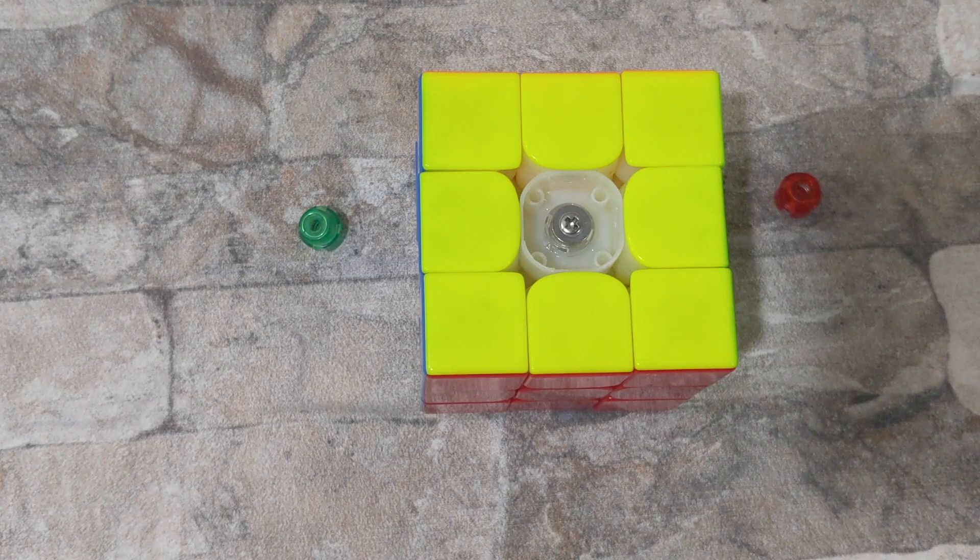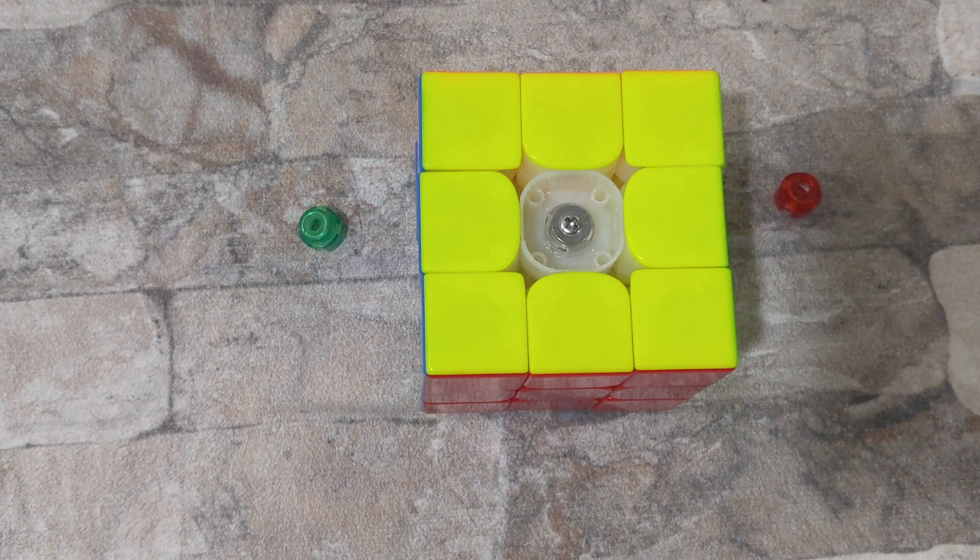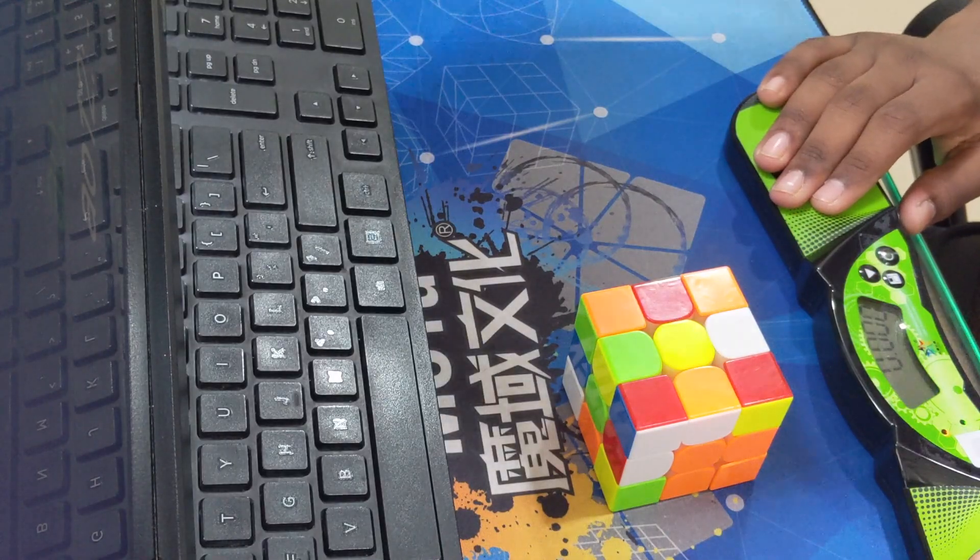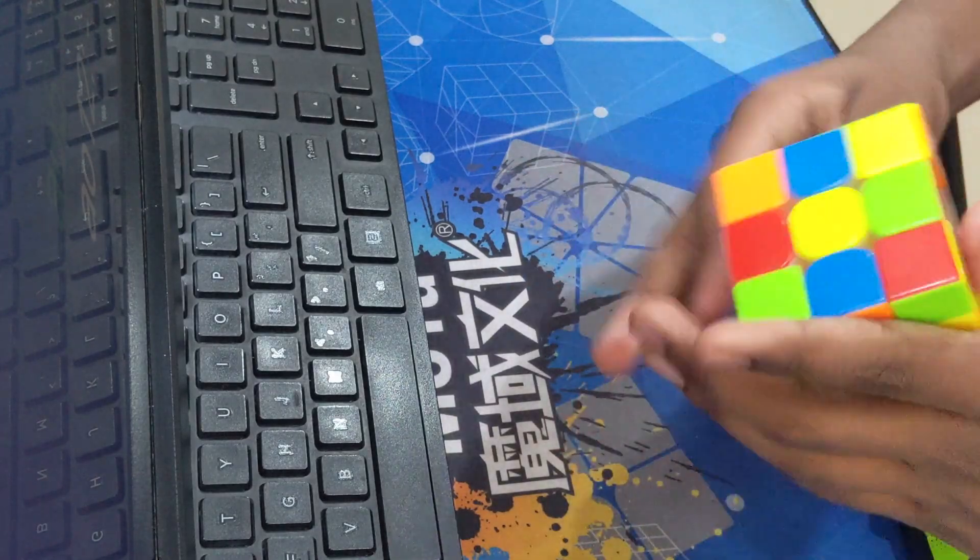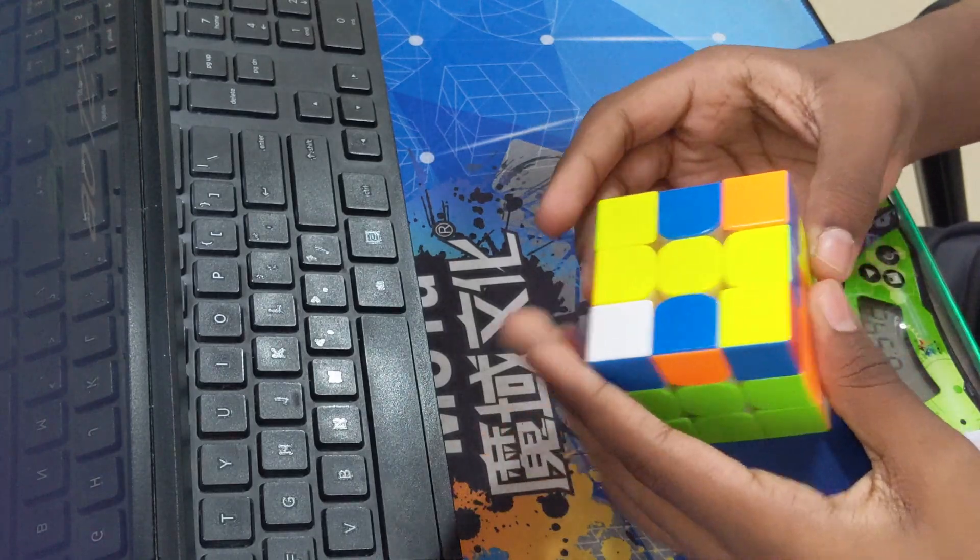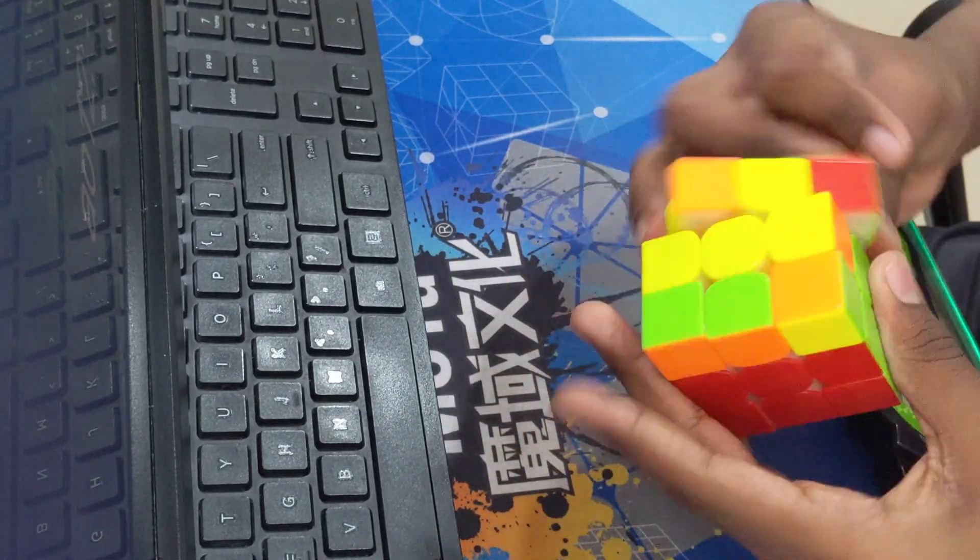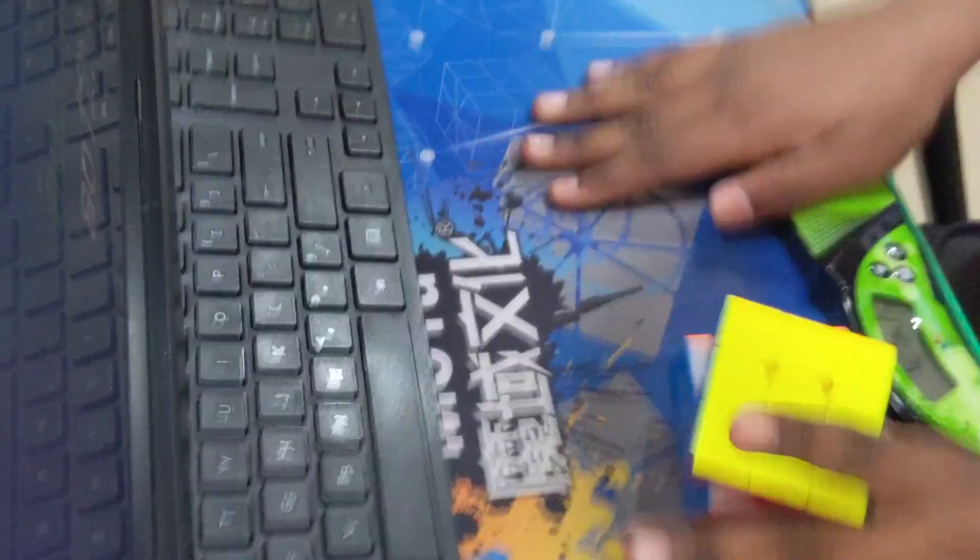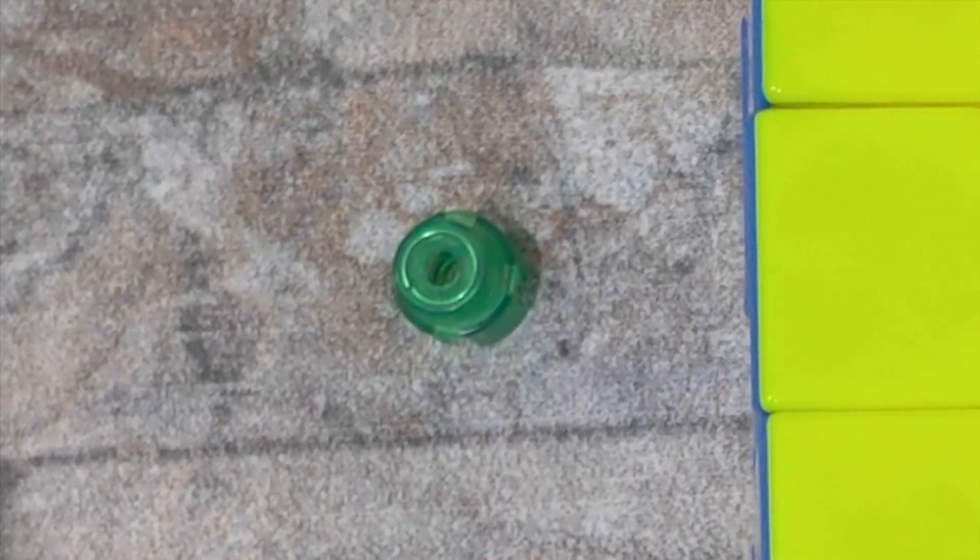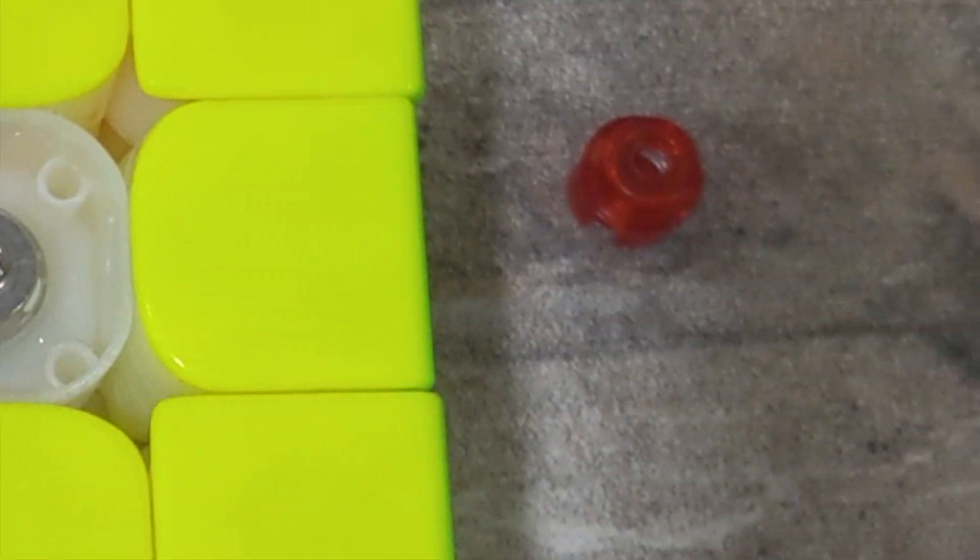The next thing is the new spring system. For this, you do have to remove the entire screw and then change the spring. I'm not a huge fan of that, but it works fine and there is customization, so that is at least better than not having it at all. Similar to the magnets, the green ones are the lighter springs, the transparent ones are the standard springs, and the red ones are the tighter springs.